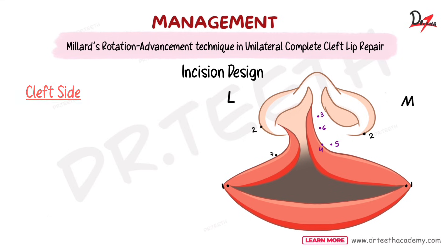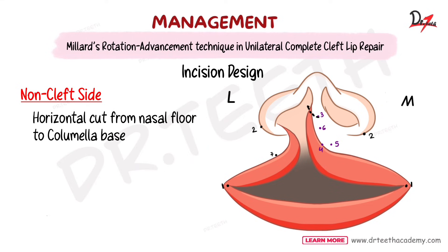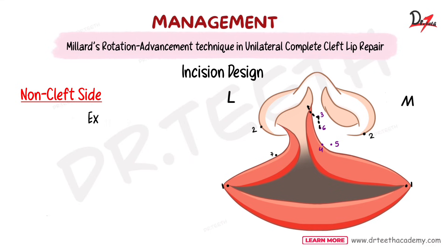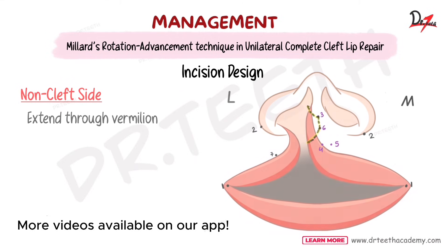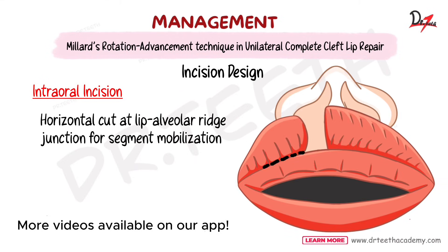On the non-cleft side, a horizontal cut is made from the nasal floor to the columella base at point 0.3, which is then connected vertically to point 0.6 (peak of the philtrum) and extended through the vermilion. Intraorally, a horizontal cut is made at the lip-alveolar junction to mobilize the lip segments and bring them together to fill the defect.